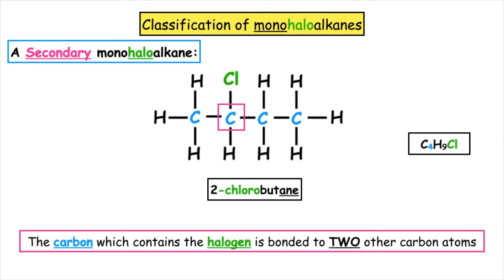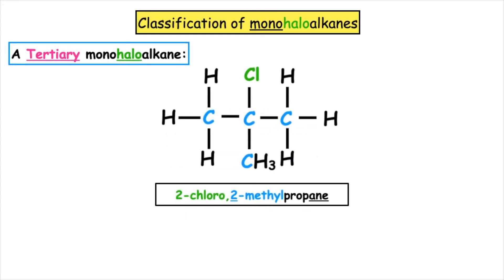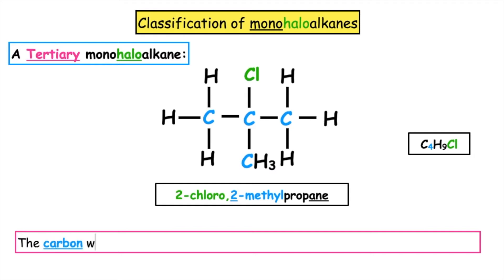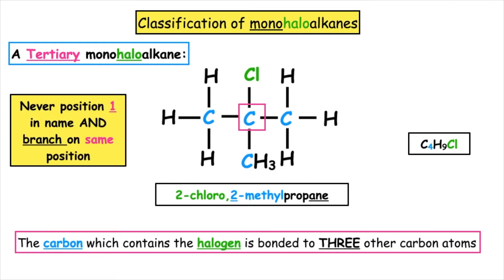The halogen is never in position 1 for a secondary. For a tertiary monohaloalkane, the carbon which contains the halogen is bonded to three other carbon atoms or three alkyl groups. The chlorine will never be in position 1, and there are three carbon atoms surrounding the carbon which contains that halogen.